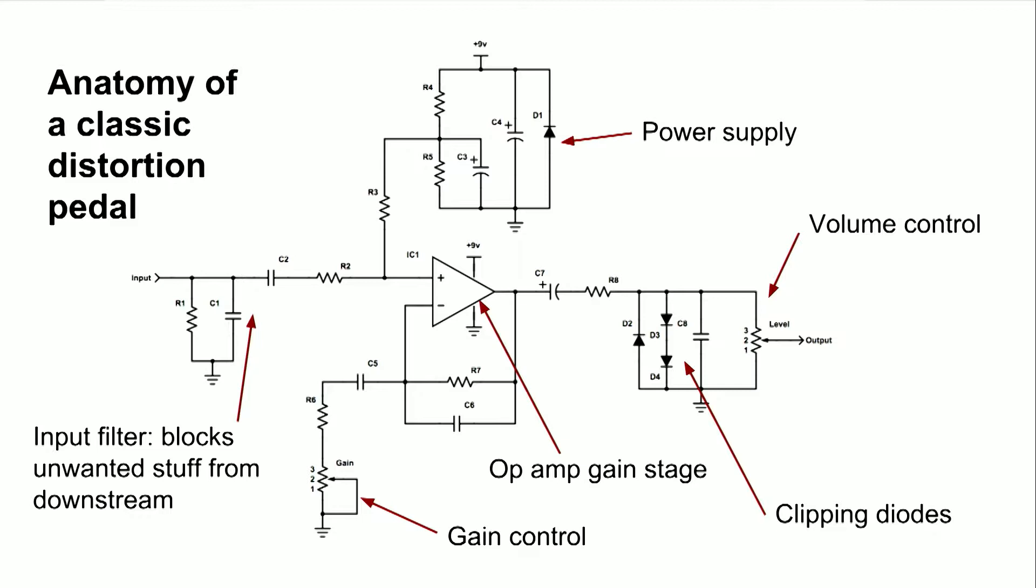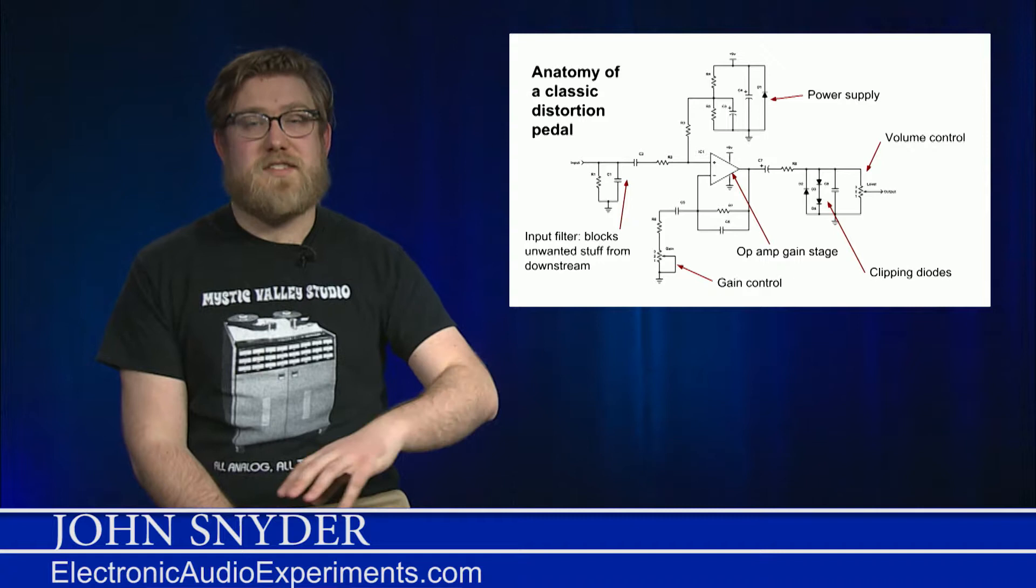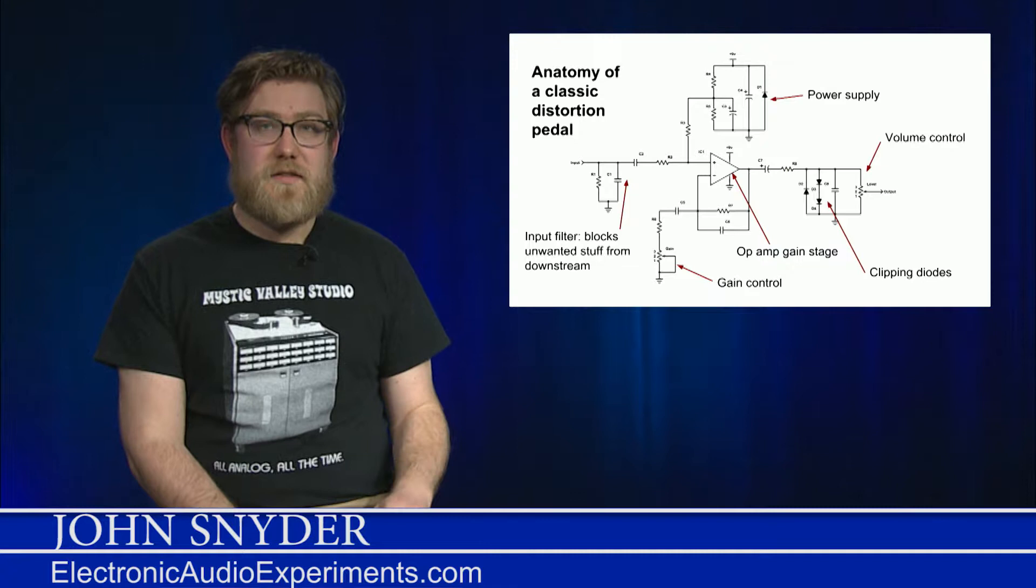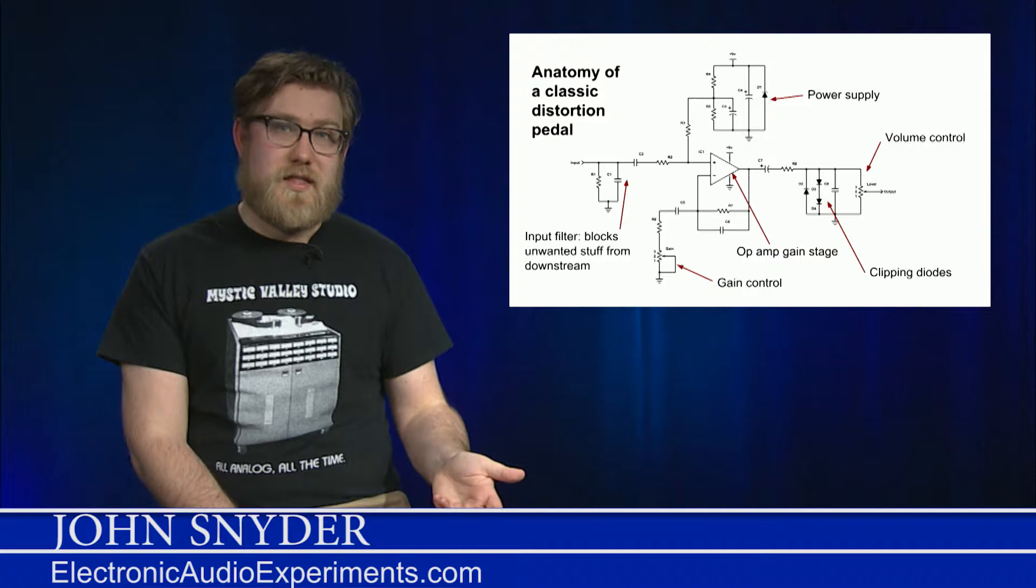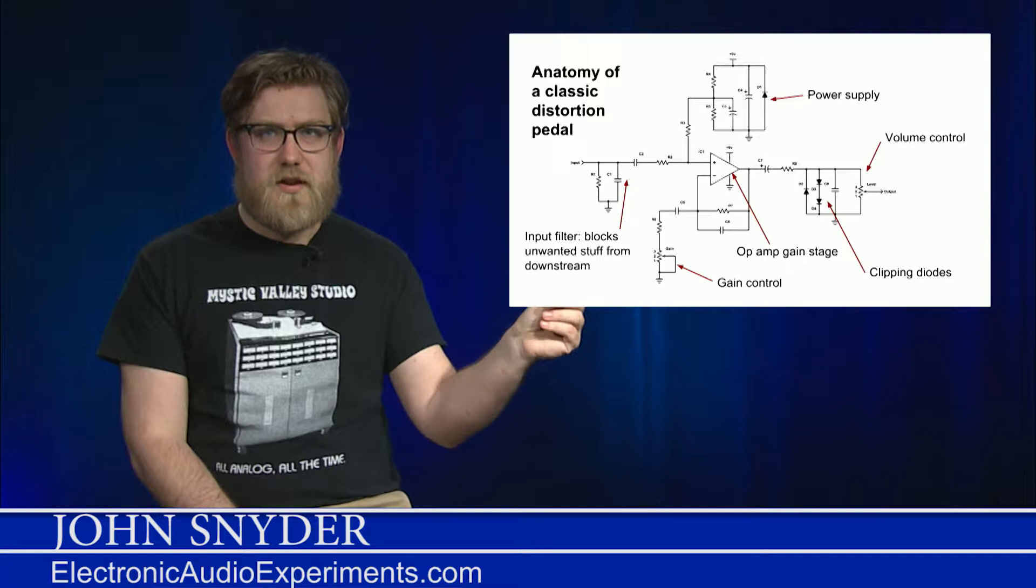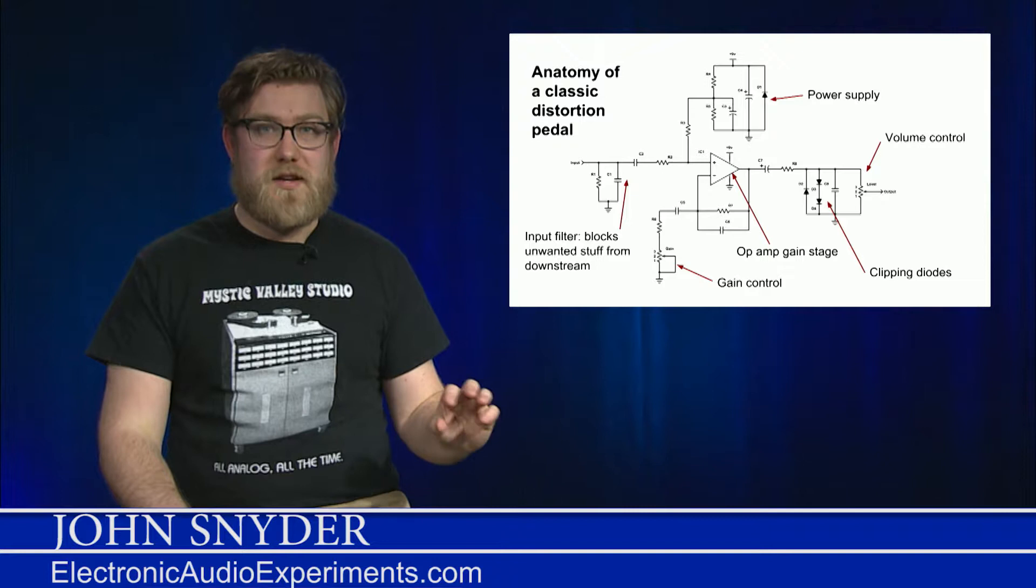Once the signal goes out of the input filter, it goes to an op amp gain stage. And that op amp gain stage is doing what we talked about last time, where it takes the input signal and it multiplies it by some factor depending on the resistors that are around the op amp. In this case, this is a non-inverting amplifier and the gain is going to be one plus the feedback resistor divided by the resistor going to ground or the shunt resistor. Now, we have a gain control at the bottom of the schematic and that gain control is the shunt resistor. And what's happening is as you turn the knob up, that resistor gets smaller and smaller. So the feedback resistor divided by the shunt resistor, that's going to get bigger and bigger and that increases your gain. So that op amp, all it's doing is amplifying the signal.